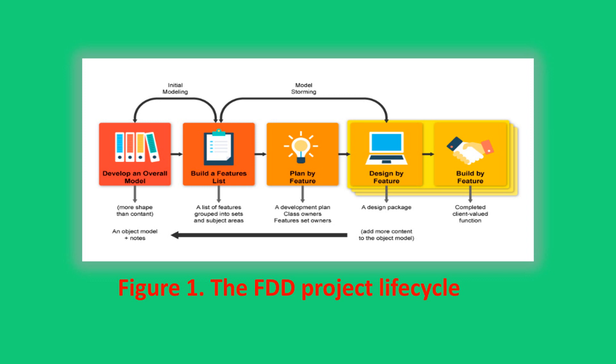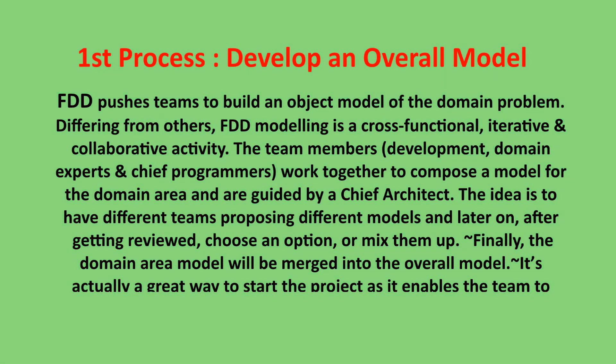The first process is develop an overall model. FDD pushes teams to build an object model of the domain problem. Different from others, FDD modeling is a cross-functional, iterative, and collaborative activity. Team members, domain experts, and chief programmers work together to compose a model for the domain area, guided by a chief architect. Different teams propose different models, which are reviewed and either chosen or mixed together. Finally, the domain area model is merged into the overall model, enabling the team to gain a strong understanding of the project and establish clear communication.